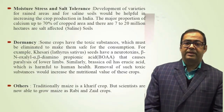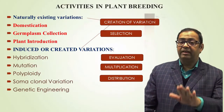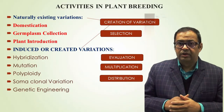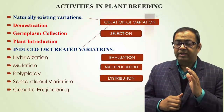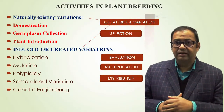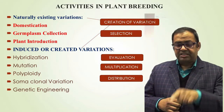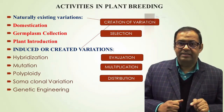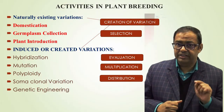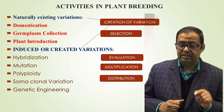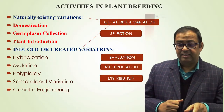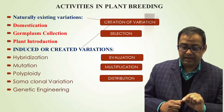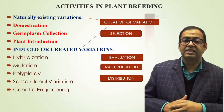Now, the activities in plant breeding — this is again a very important topic. There are five activities: first, creation of variation; second, selection; third, evaluation; fourth, multiplication; and last, distribution. Let me discuss each one by one.